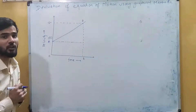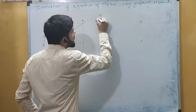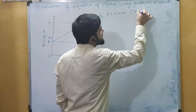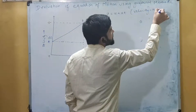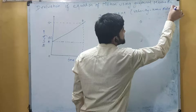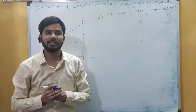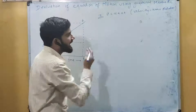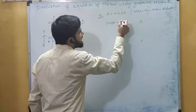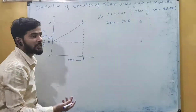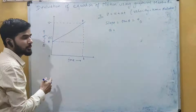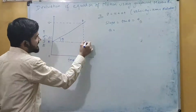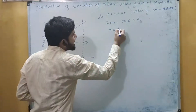The first equation of motion is v = u + at, also called the velocity-time relation. Using the first conclusion, we can calculate acceleration directly from the slope. In this graph, the slope equals tan θ, which gives the acceleration 'a'. So a equals the slope, which is perpendicular upon base — that is BD upon AD.